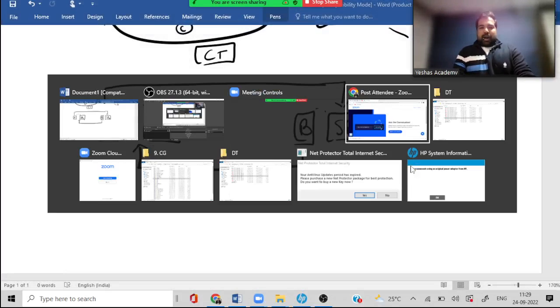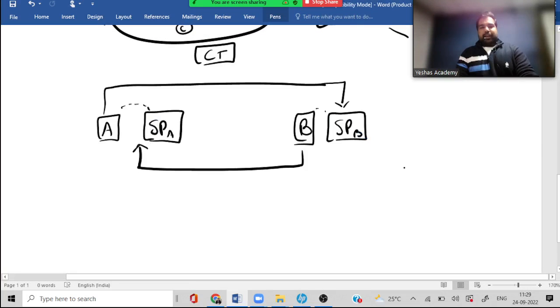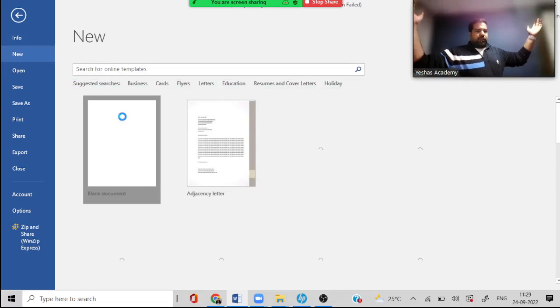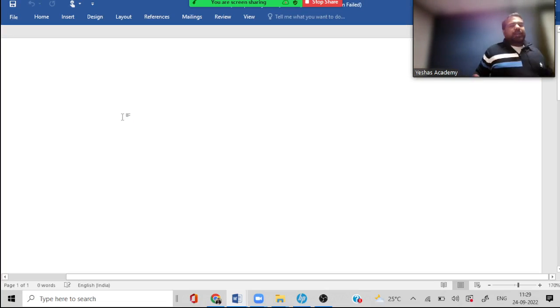This chapter that we're revising now is called set off and carry forward of losses. This chapter typically comes after five heads, after clubbing, then set off. How do you remember? Always C comes before S. So clubbing happens and then set off.